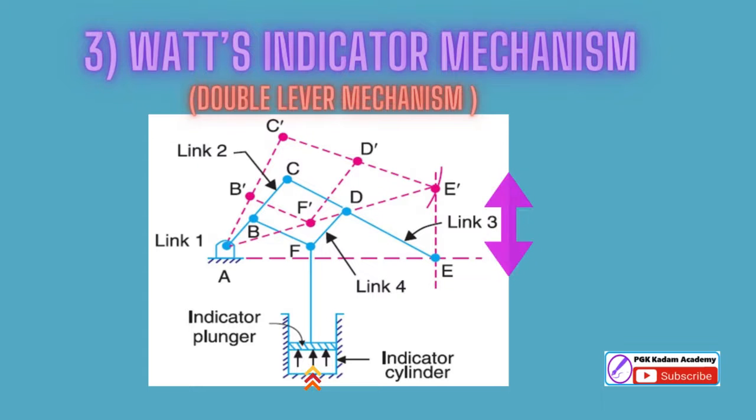The links CE and BFT act as levers. The displacement of the link BFT is directly proportional to the pressure of gas or steam which acts on the indicator plunger. The tracing point E at the end of link CE traces out an essentially straight line with any tiny displacement of the mechanism. Full lines depict the mechanism's initial position.